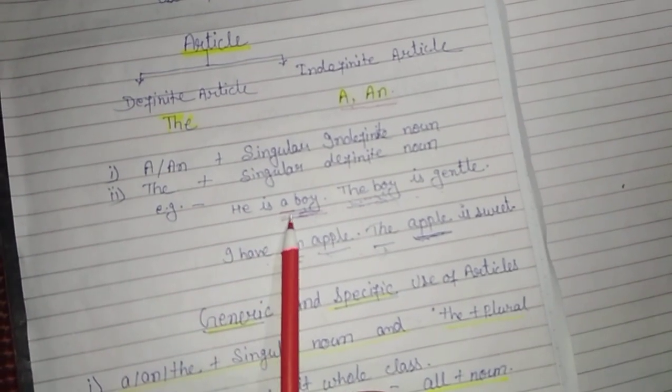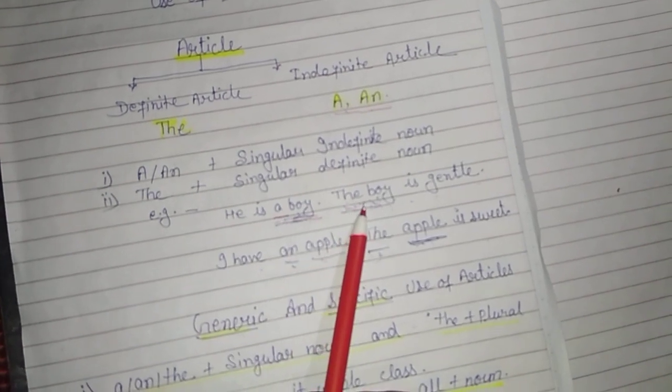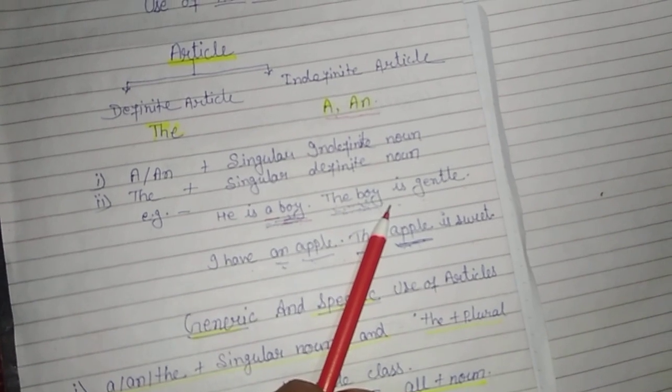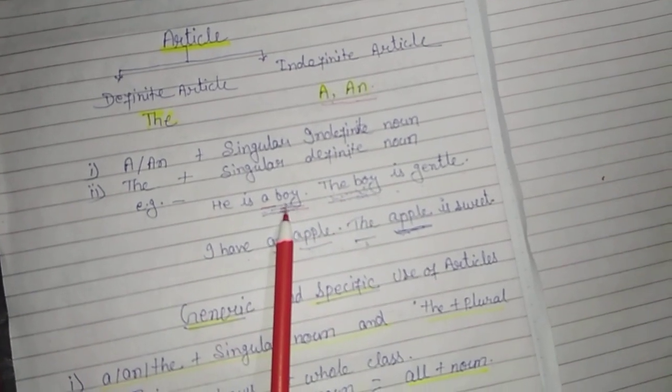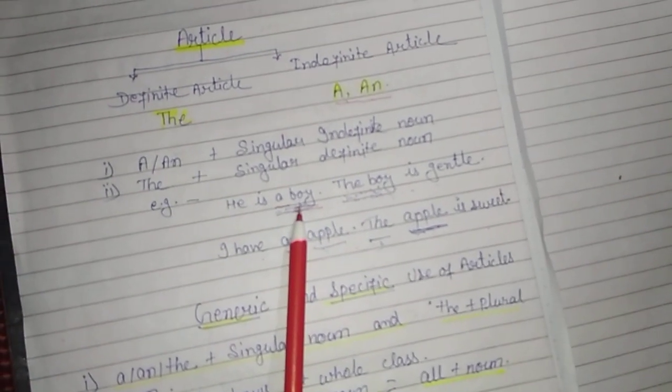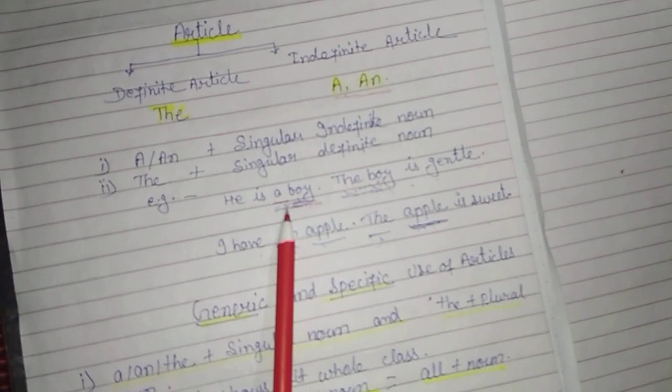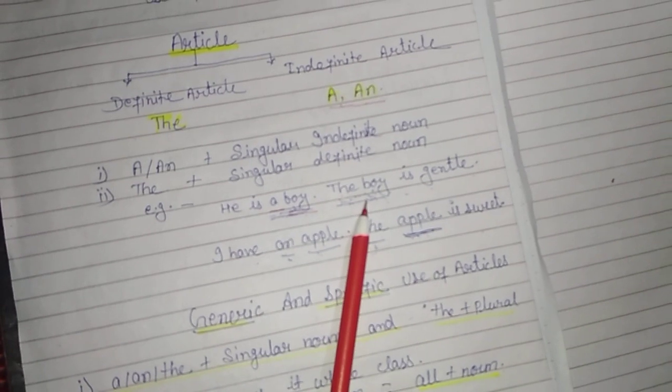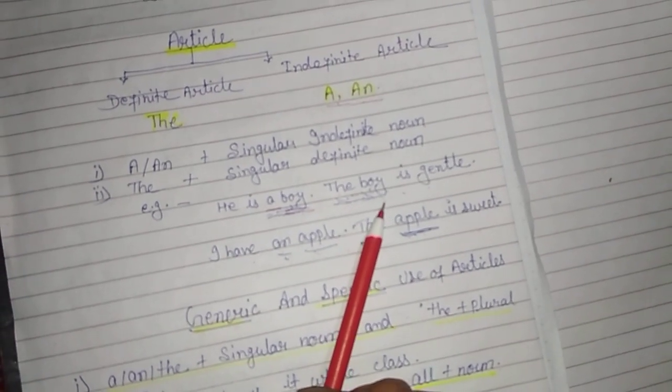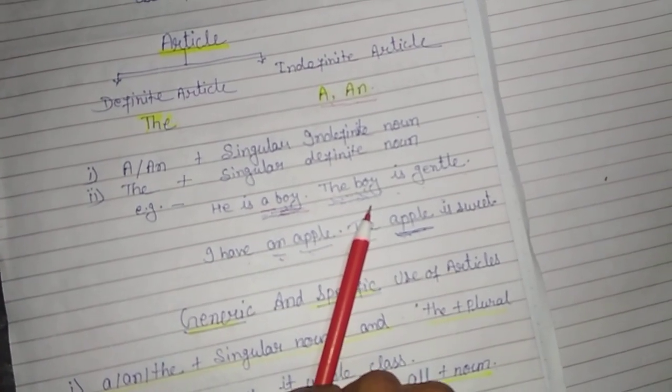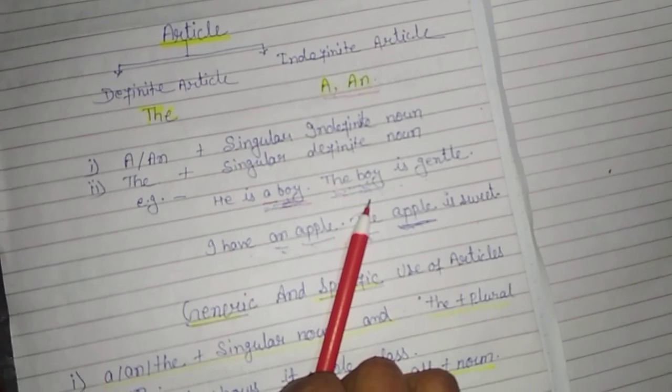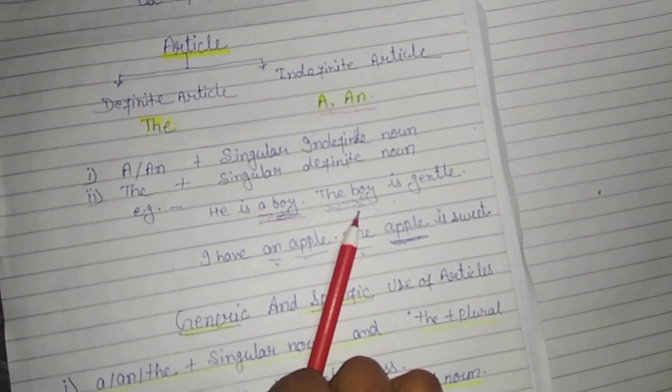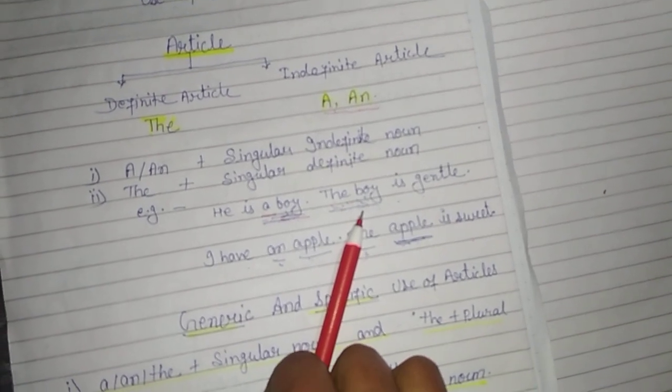When we use any noun first time in a sentence, then we use 'a' or 'an' before the noun. And when we use the same noun the second time in the sentence, you will use 'the' before the noun.